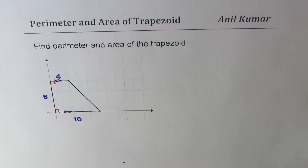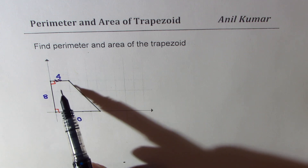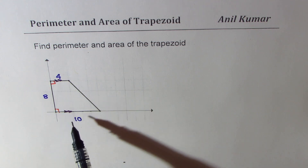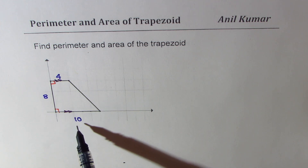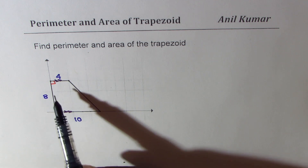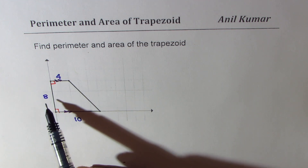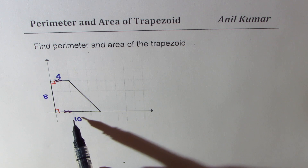Here is the very first example. You can always pause the video, answer the question, and then look into my suggestions. We are given a trapezoid whose parallel sides are of length 4 and 10 units, and the distance between the parallel sides is 8, which we call as height.